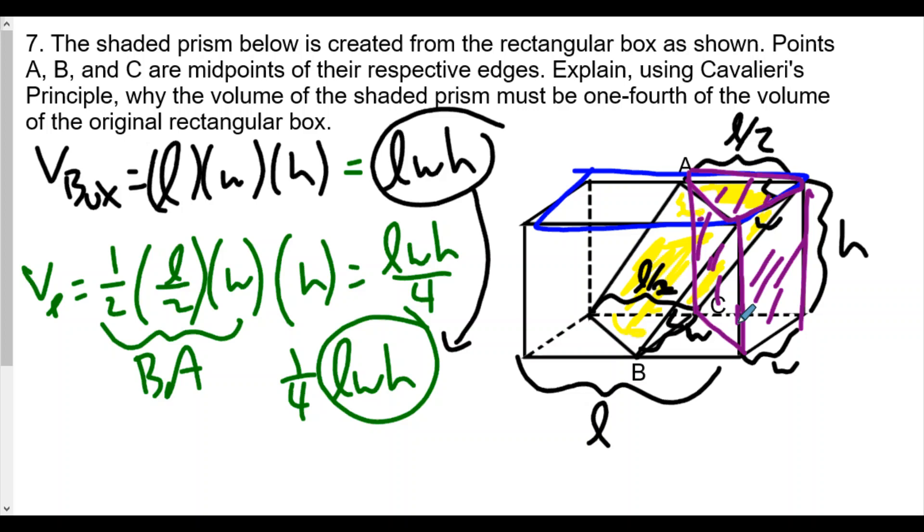So the yellow prism and the purple prism are both equal in volume, not congruent, equal in volume. And so, therefore, according to Cavalieri's Principle, we can use that to show that if the purple prism is going to be one-fourth of the volume of the rectangular box, then the yellow prism must also be the same.